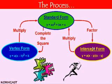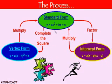For example, you may be given the x-intercepts of a quadratic equation and be asked to find the vertex. So you would need to multiply to put it in standard form, and then you'd have to complete the square to put that equation in vertex form. Or you may be given the vertex and asked to find the intercepts, so you would multiply to standard form and then factor to put it in intercept form.